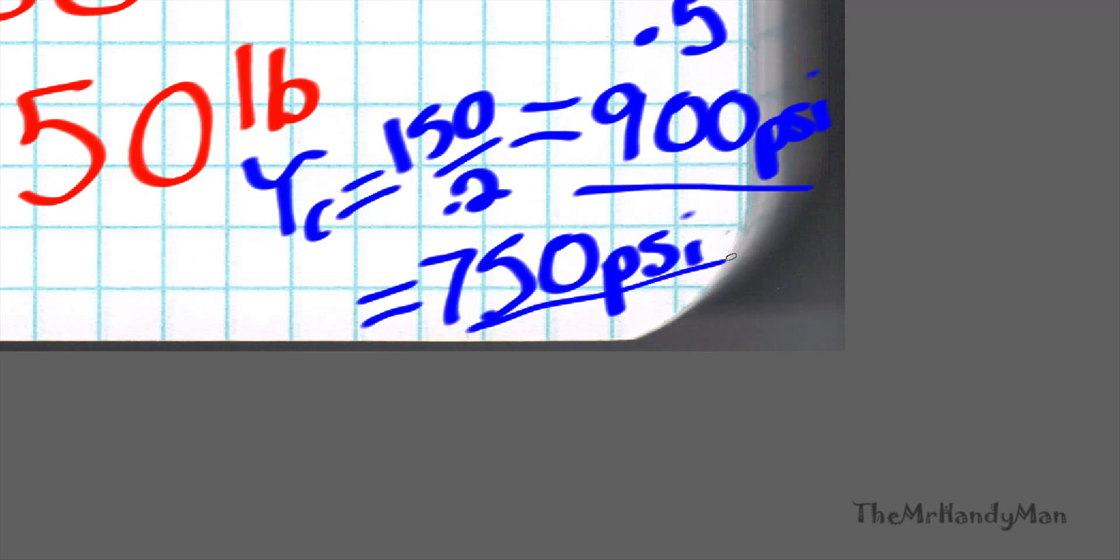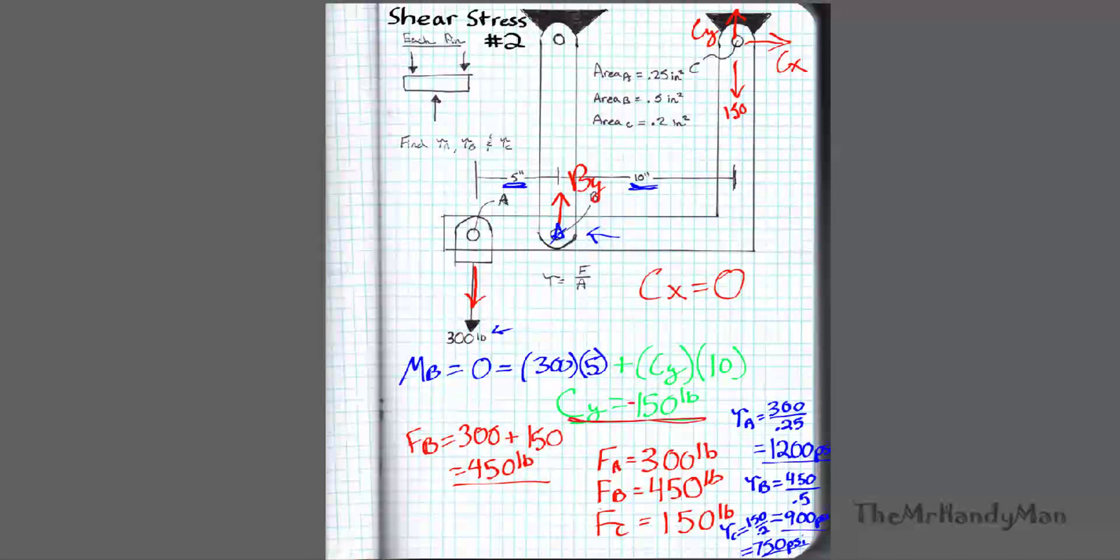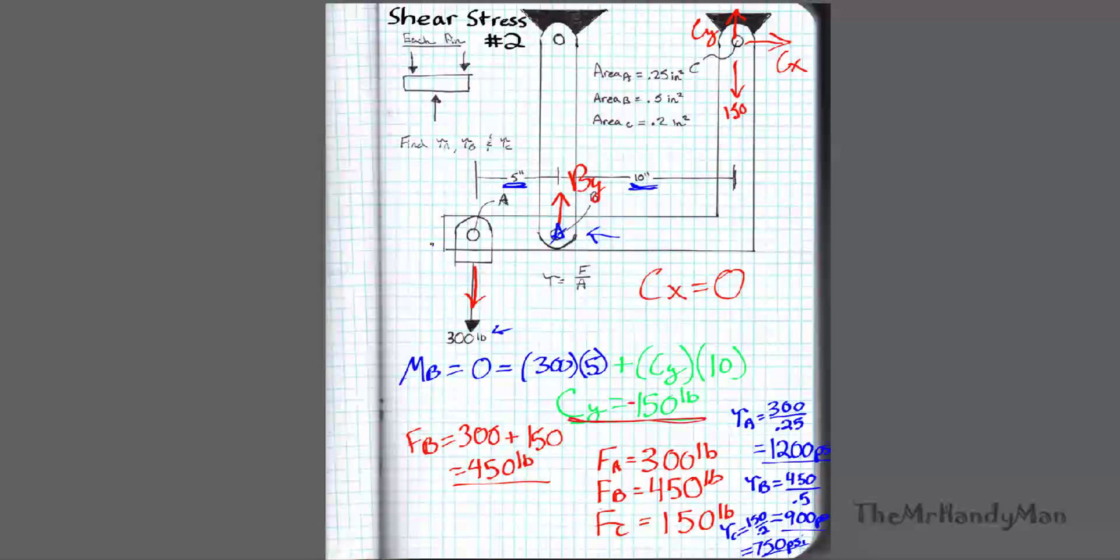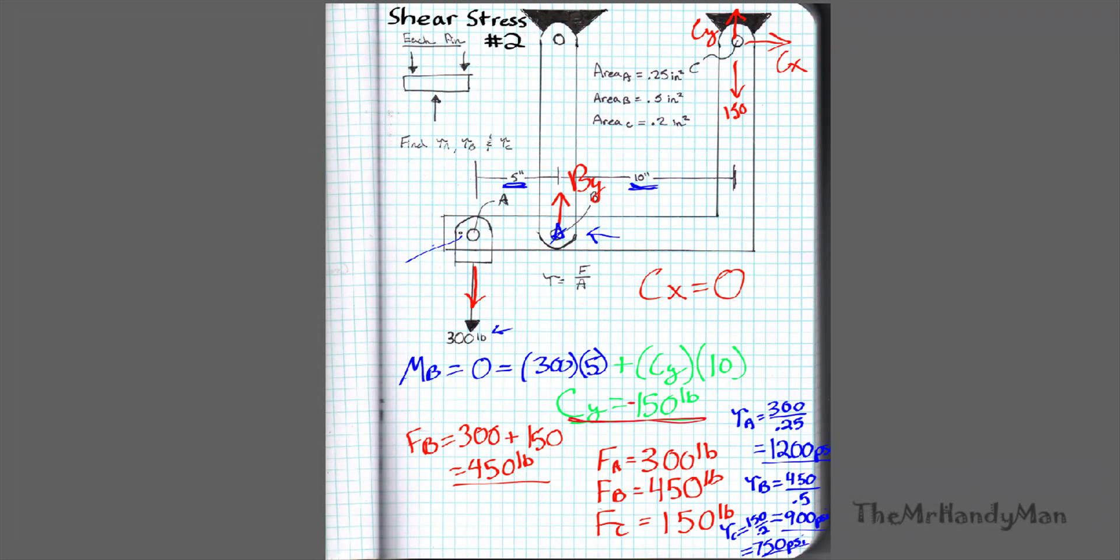So just calculating it all, we find that point A is sitting somewhere around 1200 psi.